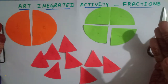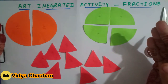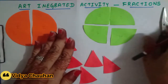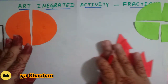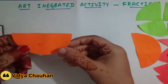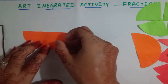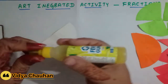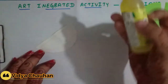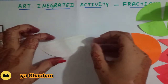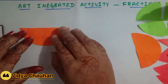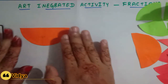Now we are going to make some very interesting pictures as part of art integration using these fractions. To draw a beautiful flower, I will be using a half fraction. Let me apply some glue on this and paste it here — this is the half part of a fraction.